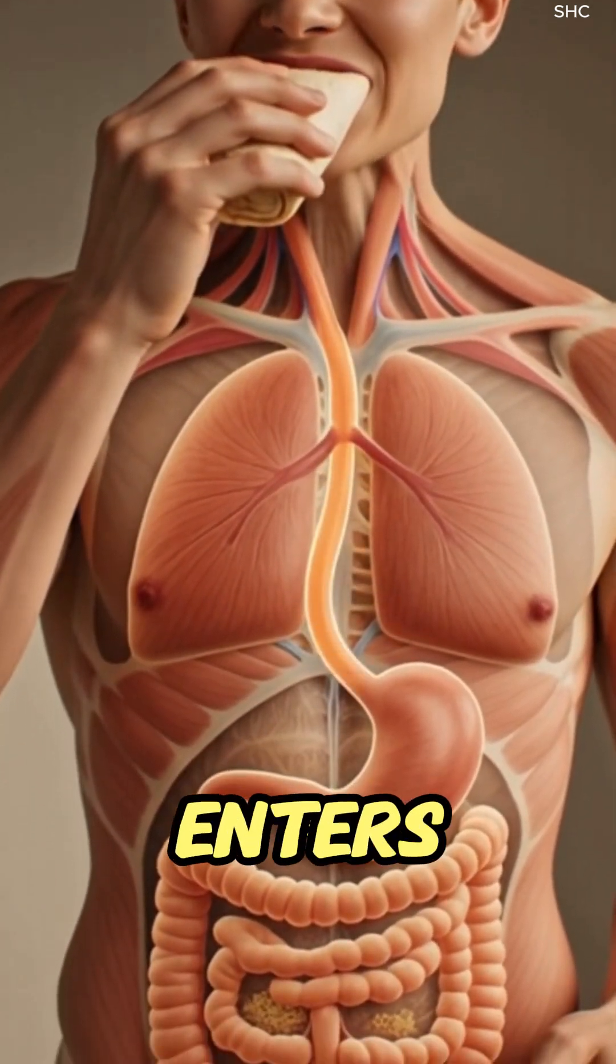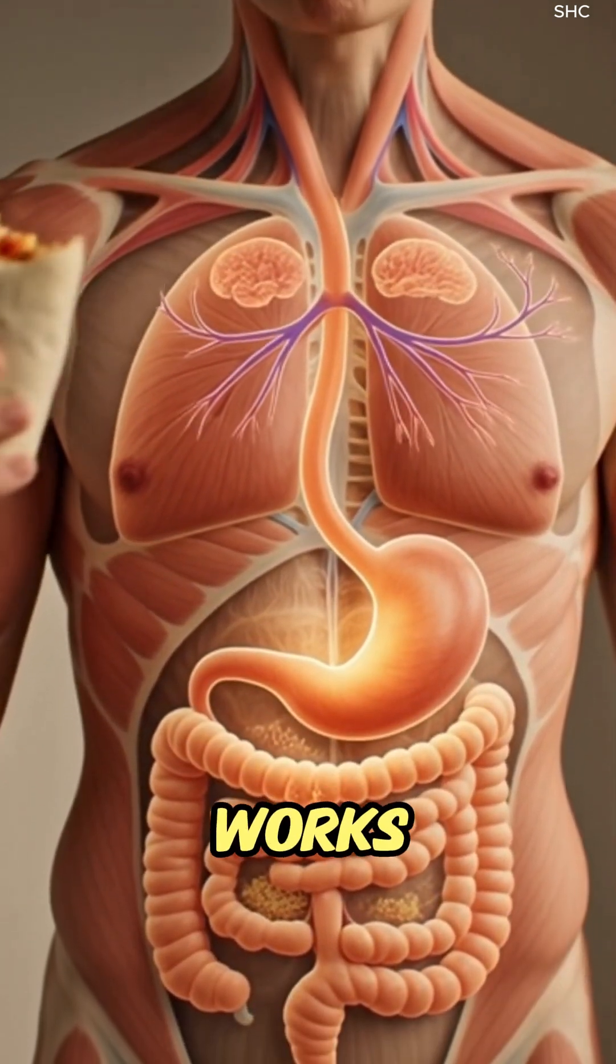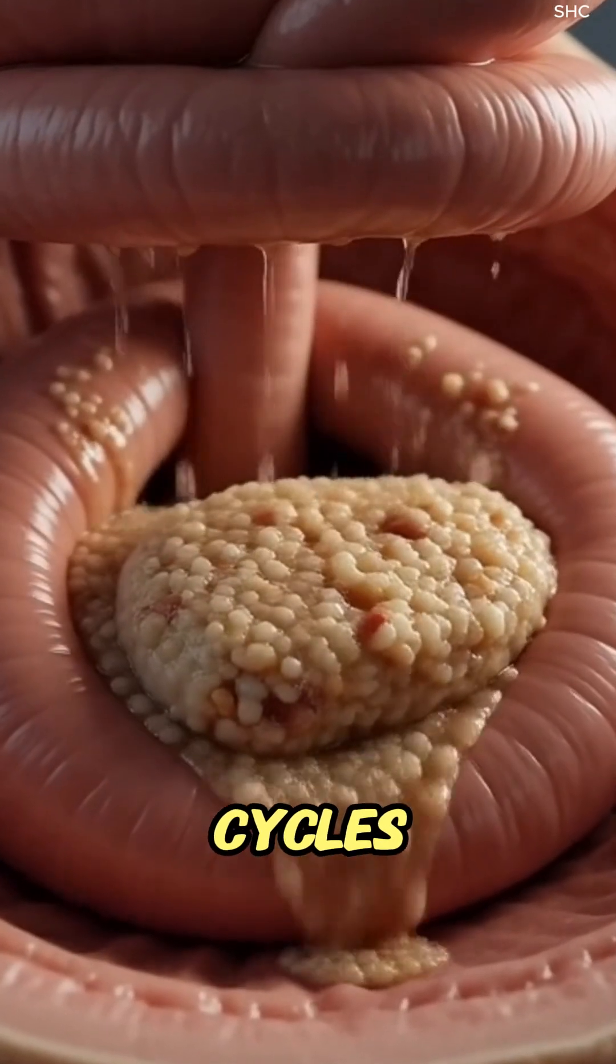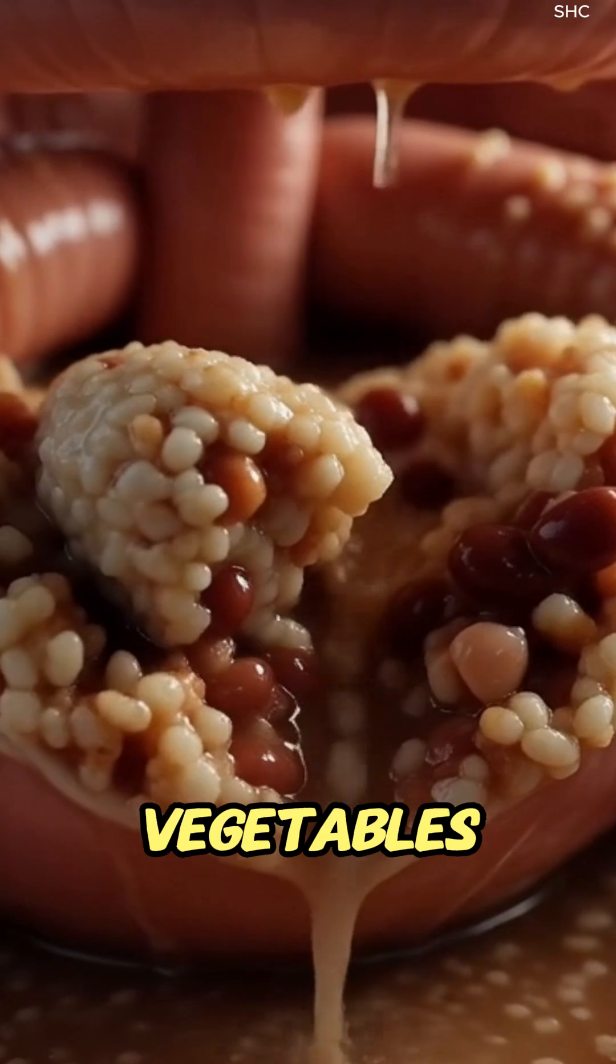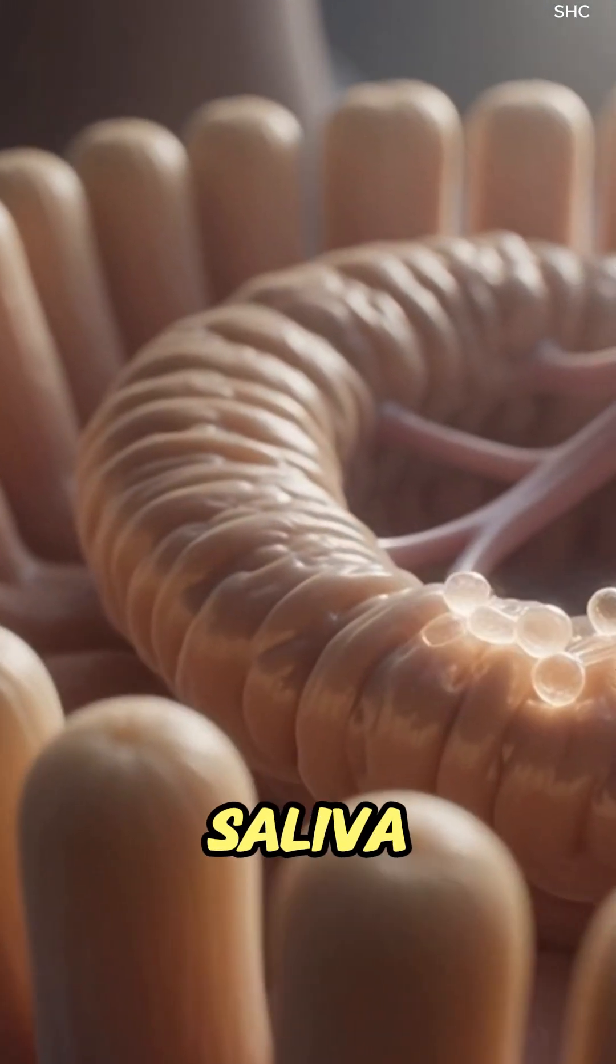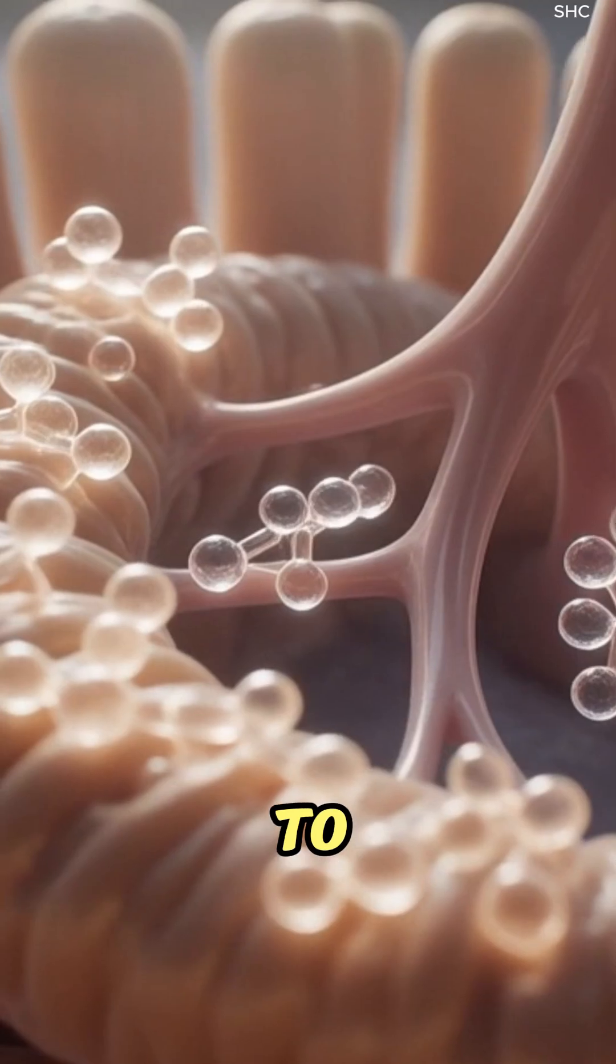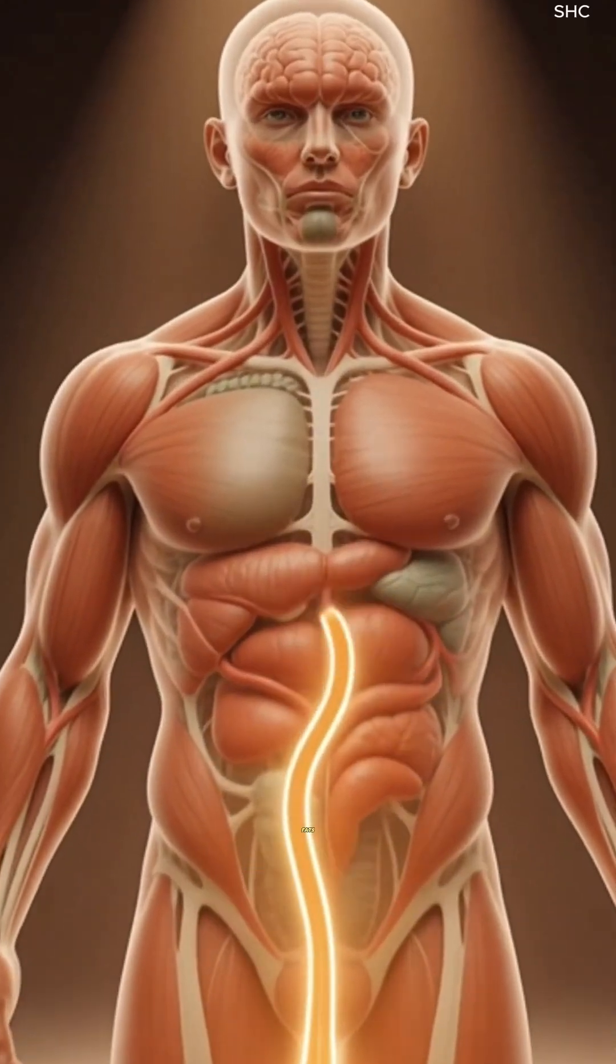As the first bite of the warm burrito enters the mouth, the jaw works in smooth, rhythmic cycles, mixing the tortilla, beans, rice, vegetables, and proteins with saliva rich in amylase and lipase to begin breaking down starches and fats.